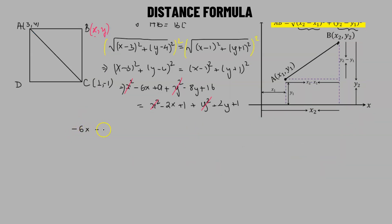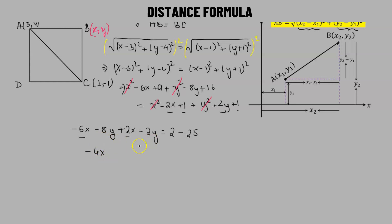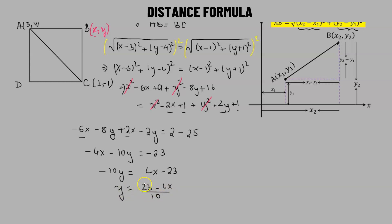After canceling, we have: negative 6X minus 8Y on the left. Transposing negative 2X gives positive 2X, and transposing 2Y gives negative 2Y. On the right we have 1 plus 1 equals 2, minus the transposed 25 (which is 9 plus 16). So: negative 4X minus 10Y equals negative 23. Isolating Y: negative 10Y equals 4X minus 23, so Y equals (23 minus 4X) divided by 10. We label this as Equation 1.